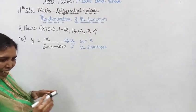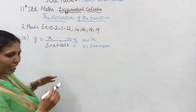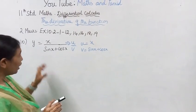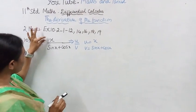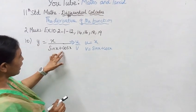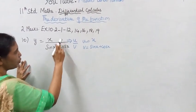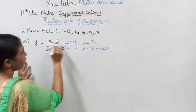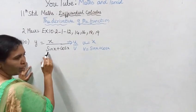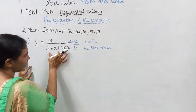First, x by tan x is easy. Now we differentiate x divided by sin x plus cos x. Then, u by v form: u is equal to x, v is equal to sin x plus cos x.